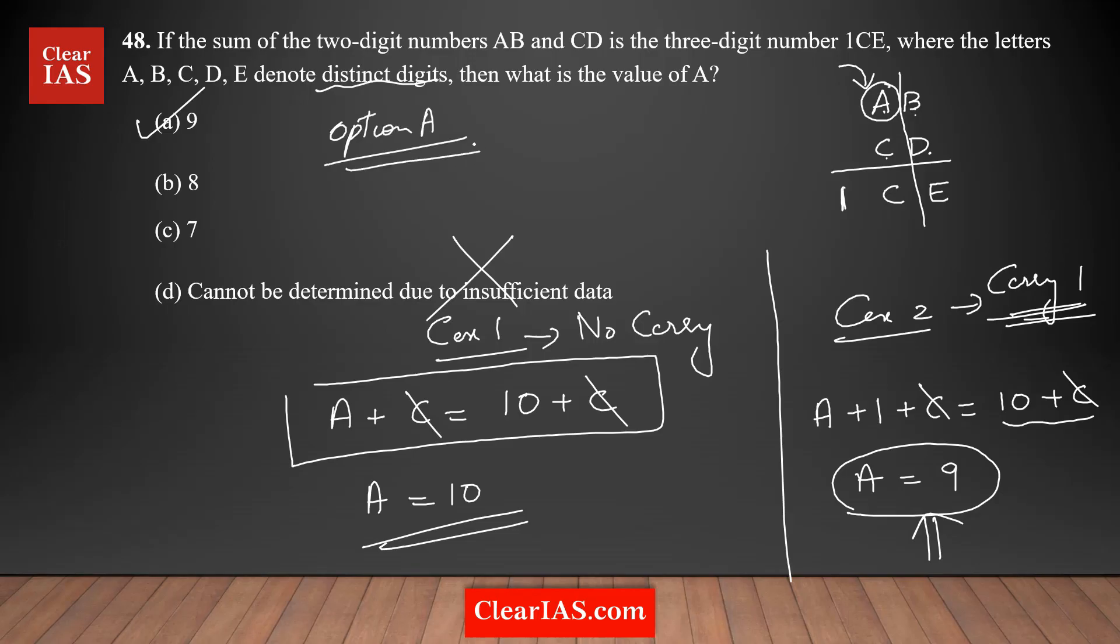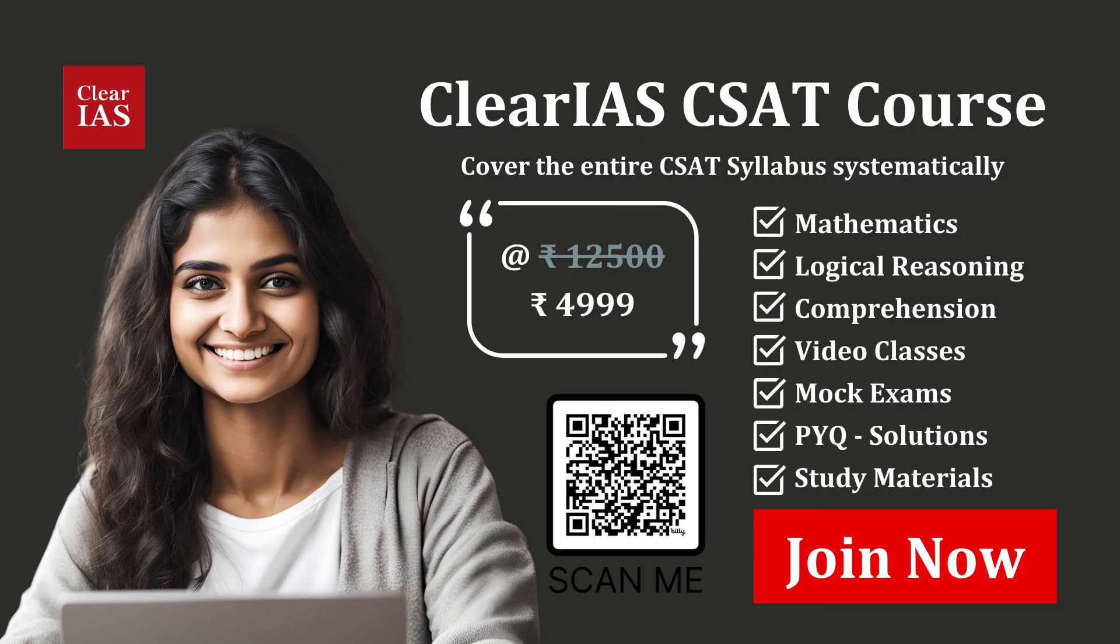So this is the best approach you could use in this question. You don't need to bother about the other digits. About B, D and E. That is not necessary. Because the question is asking you to find the value of A. So you only focus on that part.